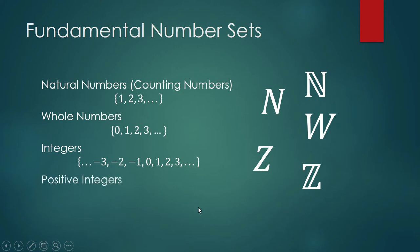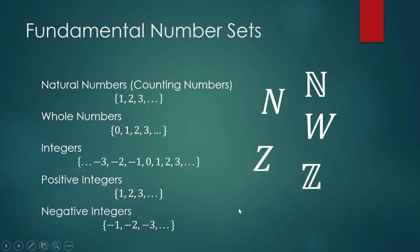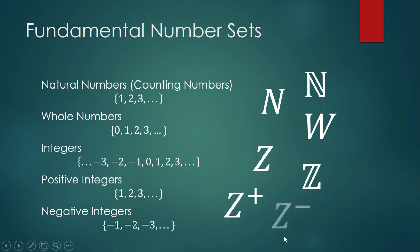Inside the set of integers, we have positive integers, which are the same as the counting numbers or natural numbers, and the set of negative integers, which are the negatives of the natural numbers. These are the symbols used for the set of positive integers and for the set of negative integers. Zero is also an integer, and its symbol is the set whose only element is the integer 0.